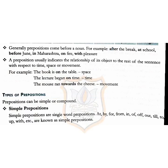Generally prepositions come before a noun. For example: after the break, at school, before June, in Maharashtra, on fire, with pleasure. A preposition usually indicates the relationship of its object to the rest of the sentence with respect to time, space or movement.